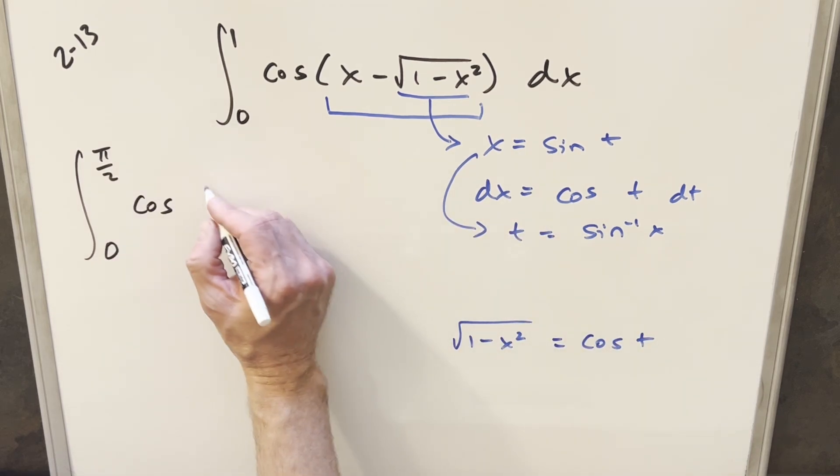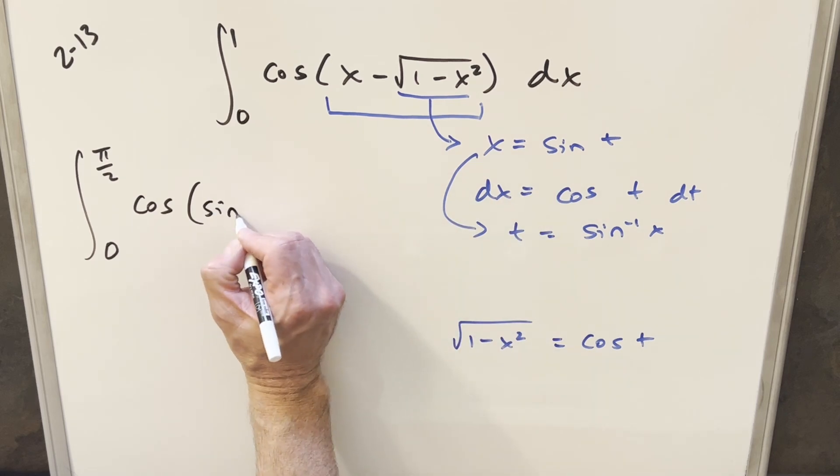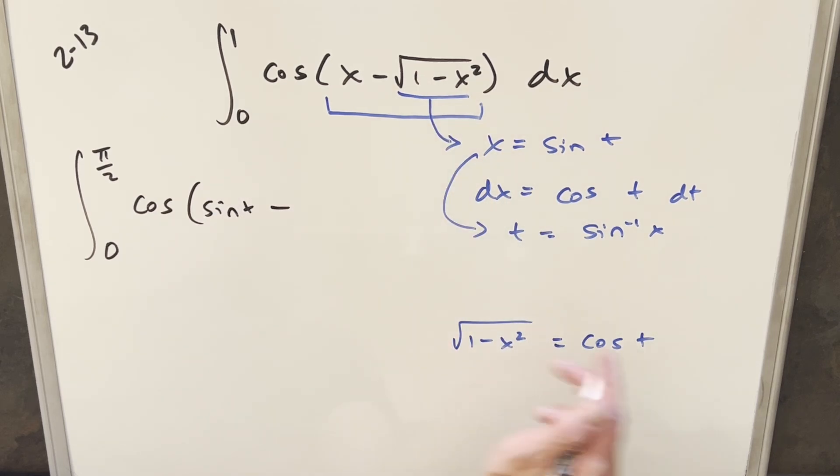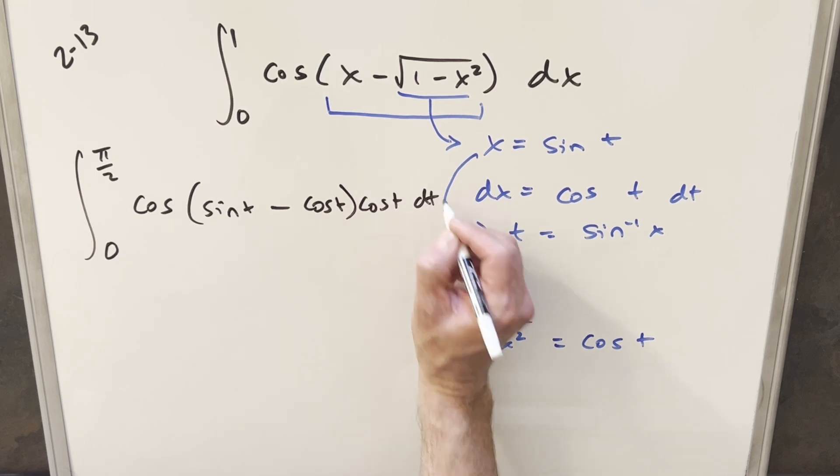Then we're going to have our cosine here, x is going to be just sine of t, and then we determine that this thing here is going to be just cosine of t, and then for our dx value we have just cosine t dt.